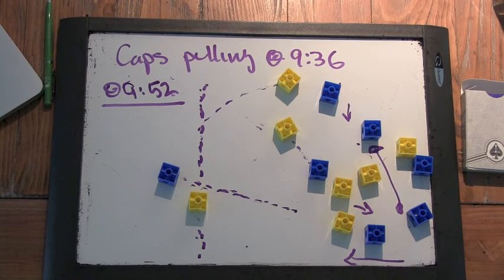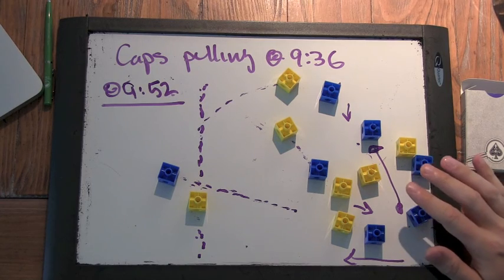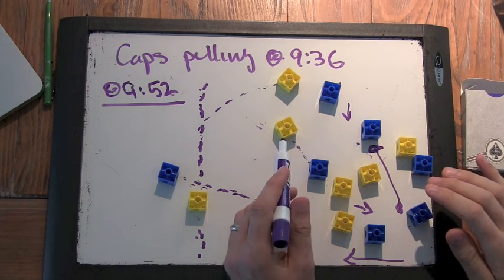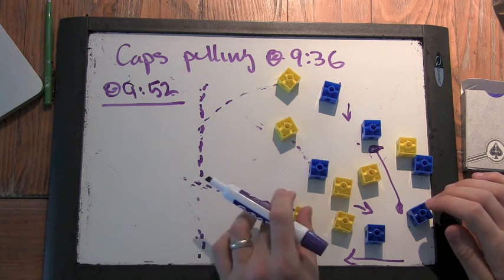Okay, so what I've tried to do here is set up the position around 9.52. Blue is Molly Brown, yellow is Capitals on defense. And I've tried to draw in some dotted lines to show you the player movement.